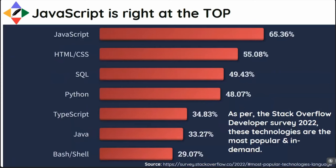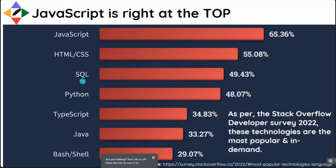I was talking about the Stack Overflow Developer Survey. According to the Stack Overflow developer survey of 2022, JavaScript stands at 65.36% — meaning the most developers say this technology is what they want to learn or are working with. Then comes HTML and CSS at 55%, then SQL. JavaScript stands at the very first position in the top four.